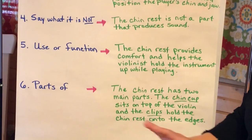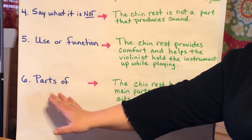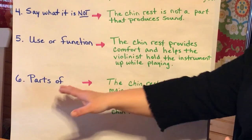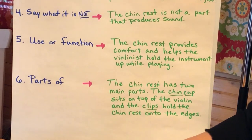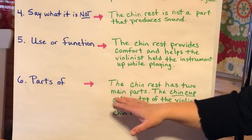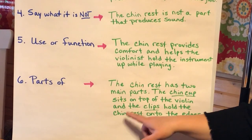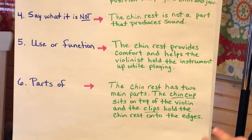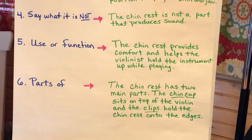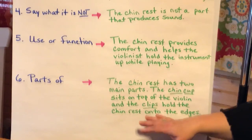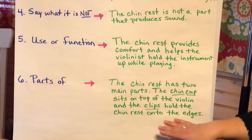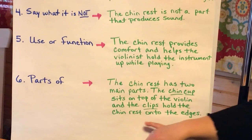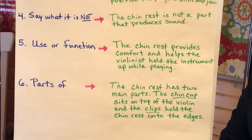The last type of elaboration I could try is to describe the parts of. I could say something like: "The chin rest has two main parts. The chin cup sits on top of the violin, and the clips hold the chin rest onto the edges."